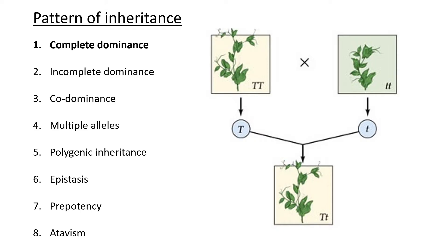To recap: complete dominance is when you have a dominant allele — capital T in this case — and a recessive allele. The dominant allele gives you the dominant trait, in this case a tall plant, and the recessive allele gives you the recessive trait, a small plant. A heterozygous individual with a capital T and a small t will still be tall, because the dominant allele suppresses the effect of the small t. Even though this individual carries the allele for small, it's tall because the capital T suppresses the small allele. This individual can still pass on the recessive allele to its children.